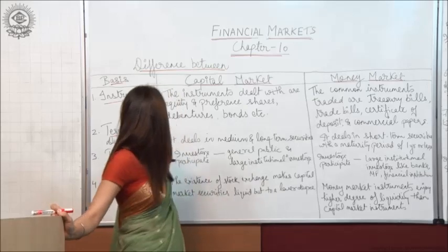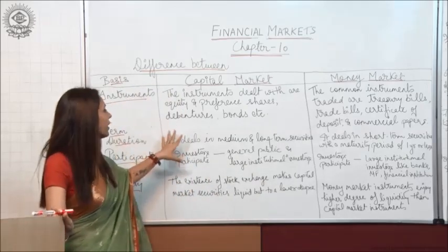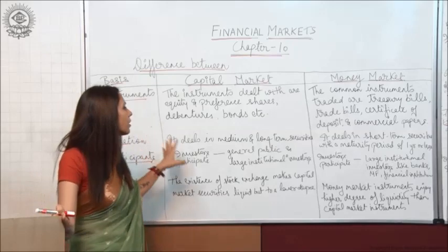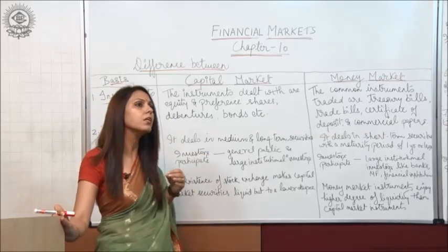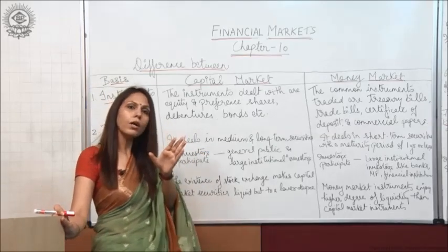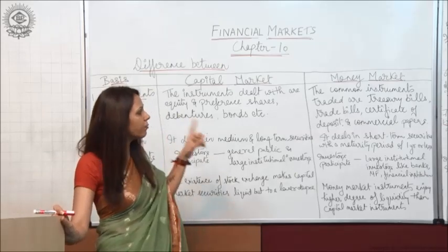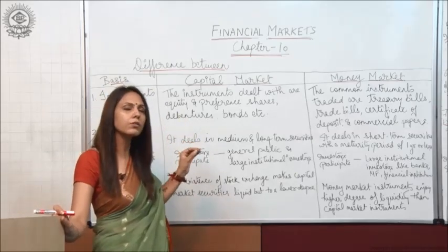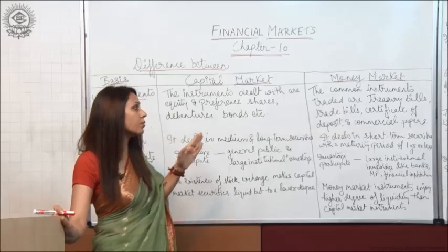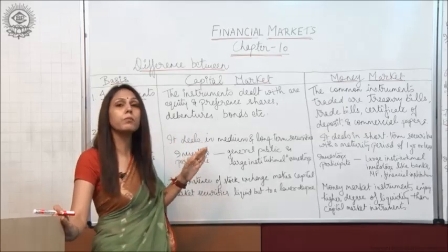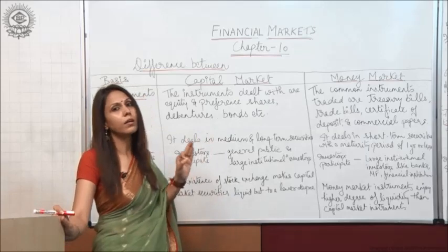The second point is term duration. Generally, capital market deals with the long and the medium term securities. Whereas the money market deals in short term securities with a maturity period of one year or less.